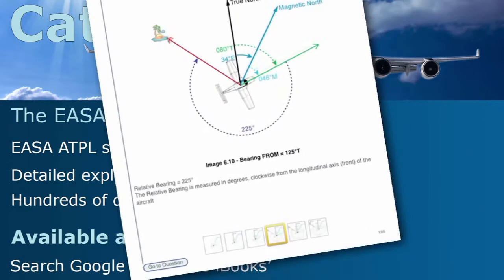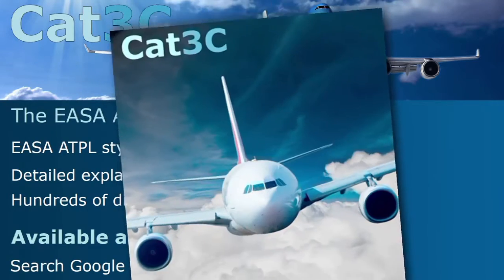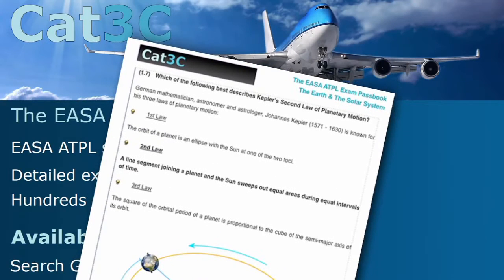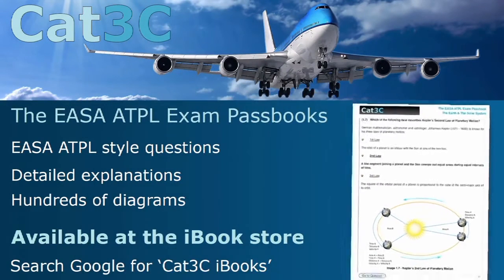The passbooks contain hundreds of exam-style questions and are supported by clear, in-depth explanations and interactive diagrams. The link to the iBooks can be found on the webpage below or at the Cat3C website at the Bookstore tab.